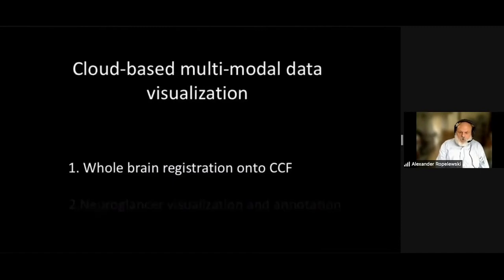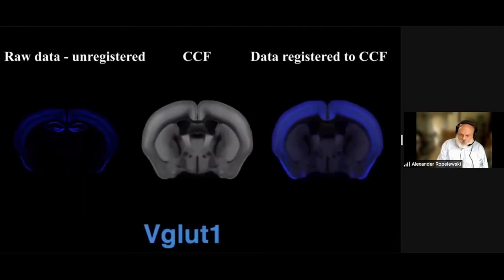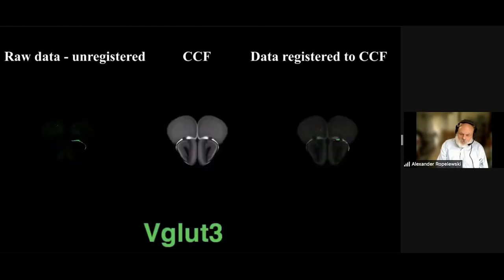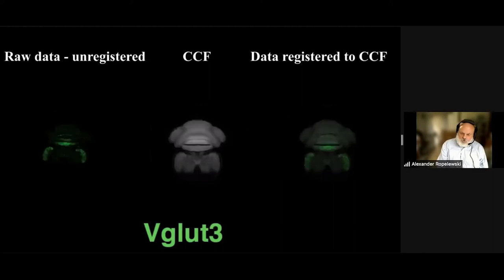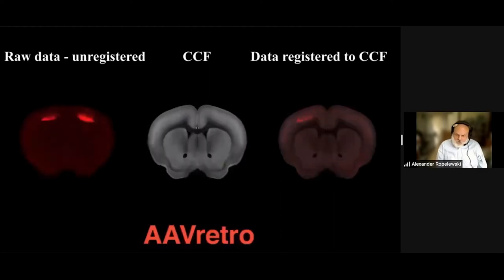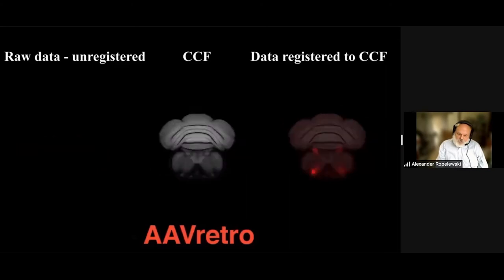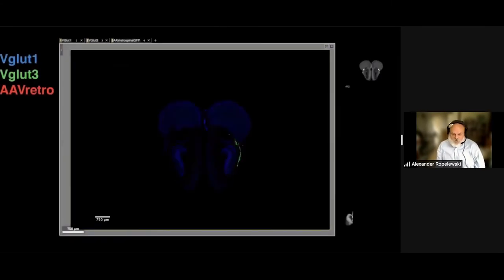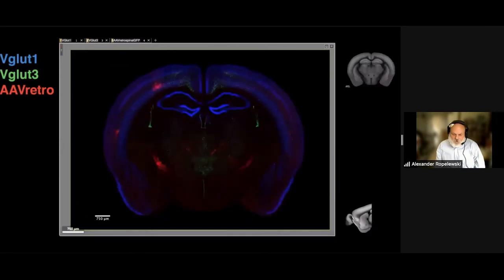This video shows the first computational pipeline step in the process, which was to align the image data sets to a common reference atlas — in this case, the Allen common coordinate framework for mice. This was done at about one micron X-Y resolution and shared to everyone with a tool called NeuroGlancer. In the movie, the left shows the raw image data, the center is the common coordinate framework, and the right is the overlay of the data registered onto the CCF. The second part of the video shows a NeuroGlancer-based data visualization of the combined data co-registered and overlaid onto the Allen common coordinate framework.